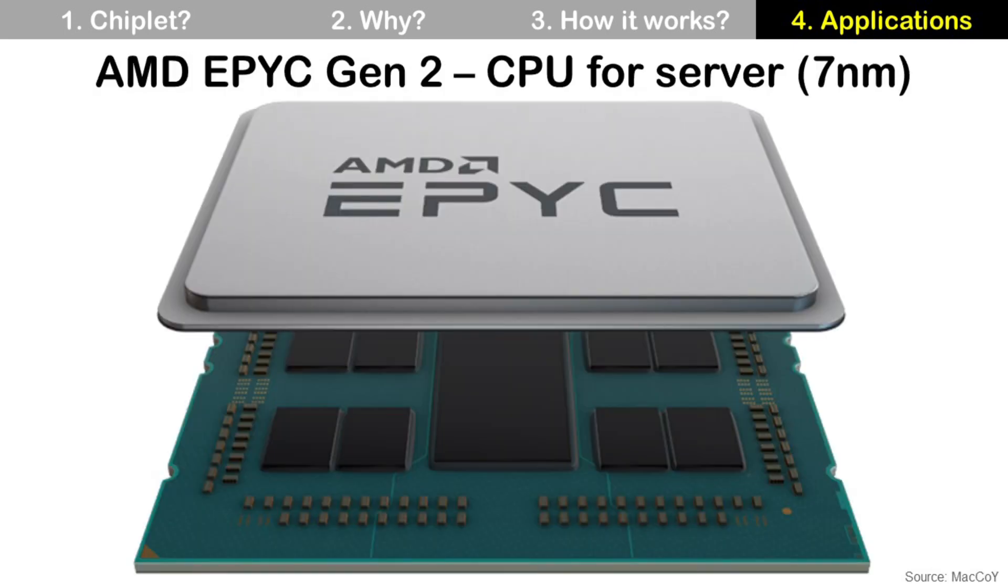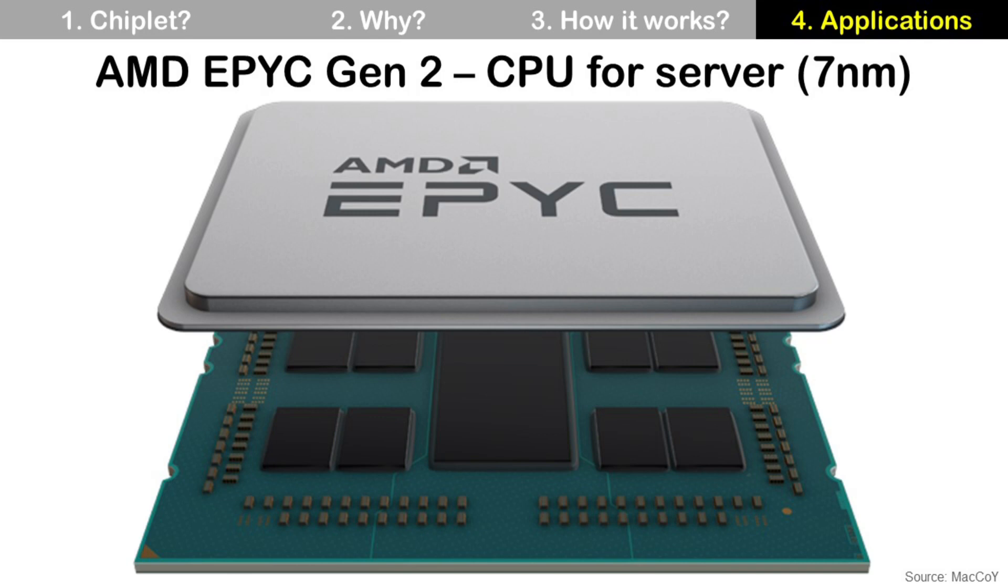This is AMD EPYC second generation package, and it is a CPU for server using 7nm silicon node technology. Its package size is 58.5mm by 75.4mm. Yes, it is big. There are eight CPUs using 7nm silicon technology, and one IO die using 40nm silicon technology at the center.